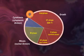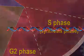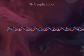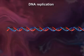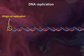DNA replication occurs in the S phase of interphase during the cell cycle. DNA replication starts at a definite region called the origin of replication.